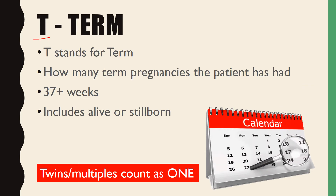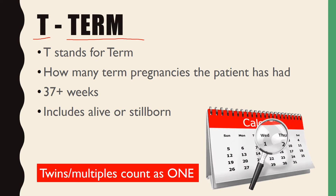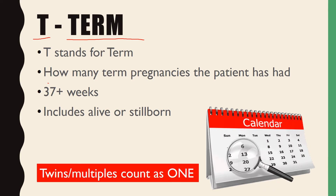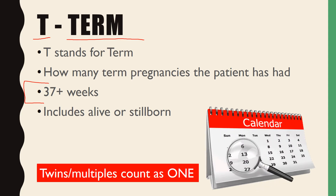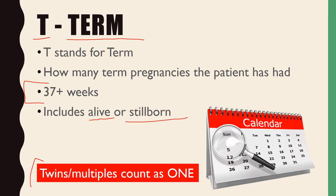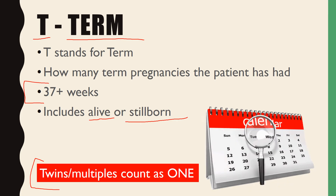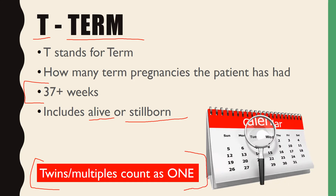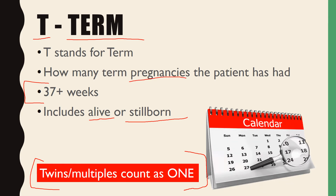The next letter is T. T stands for Term. This means how many pregnancies has the patient had that ended at term. Term is described as 37 weeks or more, and this includes births that are alive or stillborn. Once again, twins or multiples count as one — it's one term birth. It's not per fetus; pregnancies is the keyword.